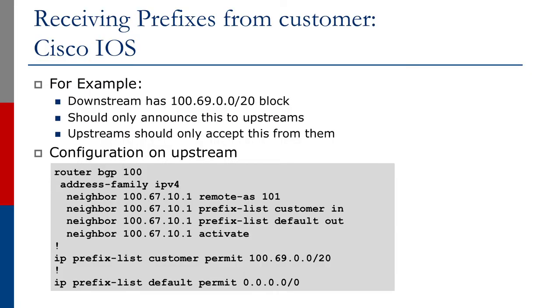We'll now give an example of how to receive prefixes from a customer using Cisco IOS. As indicated on the screen, the IP address block 100.69.0.0/20 is allocated to the customer and should only be announced to the upstream provider. The upstream provider should only accept this from the customer and nothing else. As you can see from the upstream provider's BGP configuration, the customer prefix is configured under prefix-list customer and assigned as an inbound filter under the neighbor configuration. Since the upstream provider is only providing a default route to the customer, the default route is assigned to the prefix-list default and assigned to the outbound filter of the upstream provider's neighbor configuration.